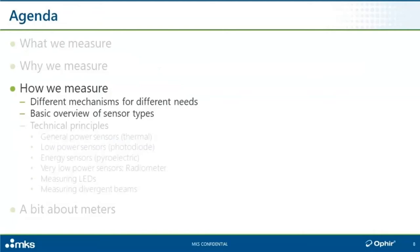Now let's begin discussing how we measure. We're going to look at the different mechanisms used for different types of measurements, and then look at the basic sensor types based on those mechanisms. Because we understand the mechanisms, we'll be able to appreciate what sensor types would be used for what kind of measurements and what their limitations are.